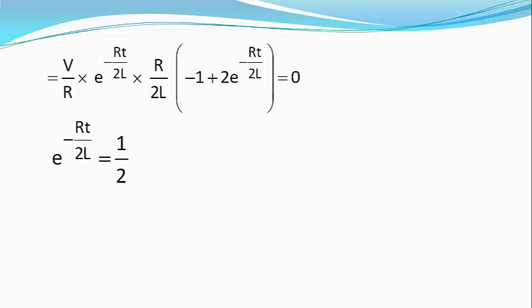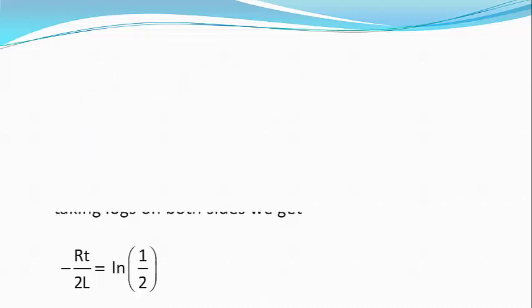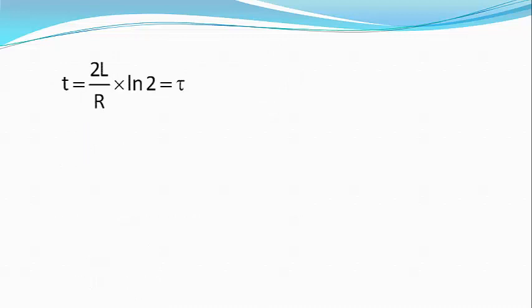Or e raised to power minus RT by 2L equals 1 by 2. Taking logs on both sides we get minus RT divided by 2L equals natural log of 1 by 2, or t equals 2L divided by R into natural log of 2, which is equal to tau. Therefore statement D is correct.